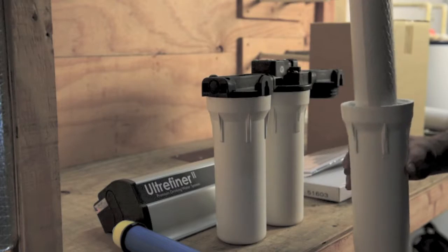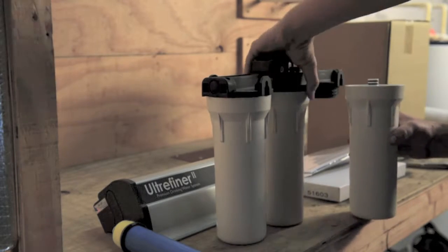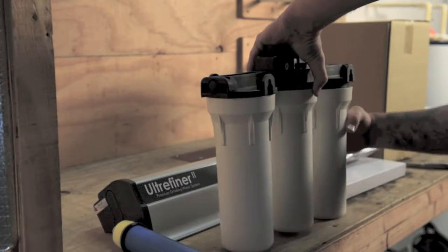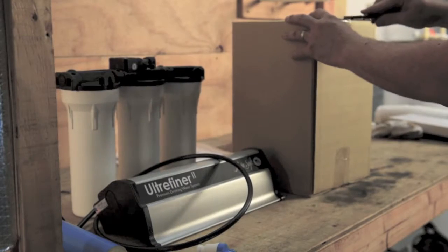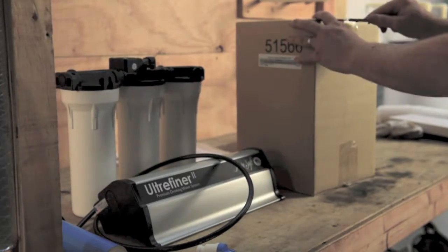Next, remove the third canister and place the post filter. By installing the first and third filters only, it allows the system to pressurize so you can check for leaks.